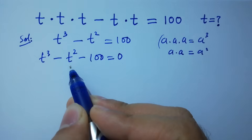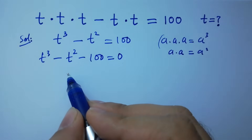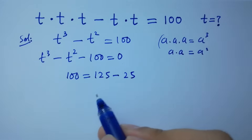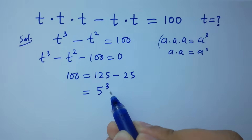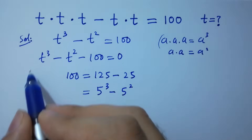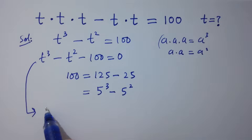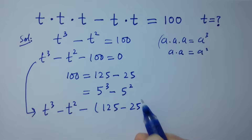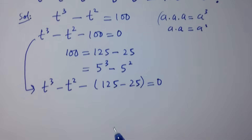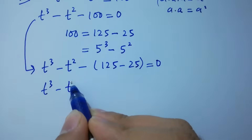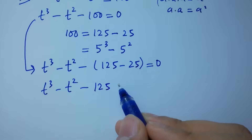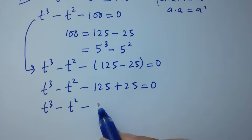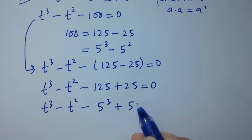Here, if we look at t cubed and t squared, we should take 100 equal to 125 minus 25, where 125 is 5 cubed and 25 is 5 squared. Then it becomes t cubed minus t squared minus 125 minus 25 equal to 0, which is t cubed minus t squared minus 5 cubed plus 5 squared equal to 0.